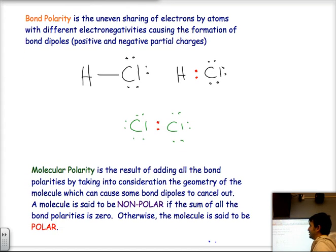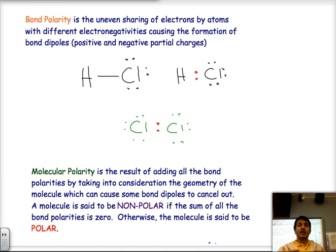The bond polarity, then, is something that occurs when there is uneven sharing of electrons between atoms that have different electronegativities. That causes the bond dipoles, which I just mentioned. And so, let's look at how that happens here.